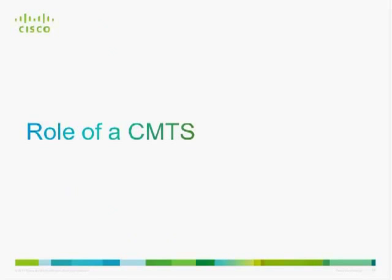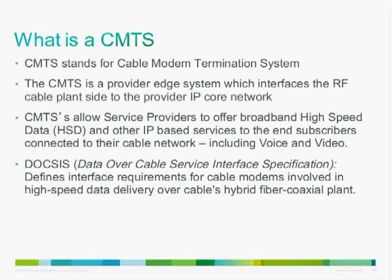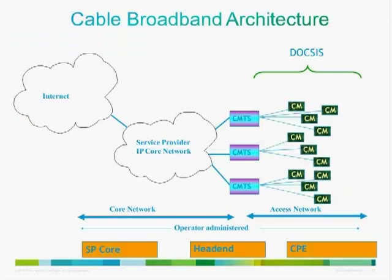The role of a CMTS: CMTS stands for Cable Modem Termination System. It's what service providers use to bridge RF interfaces with their core network or IP side. On the right side of the diagram, those noted as CM are cable modems — either residential or business customers. All those cable modems aggregate to the CMTS, which takes data to and from, giving access to the internet or video services from the service provider.